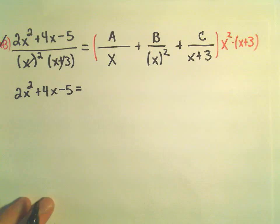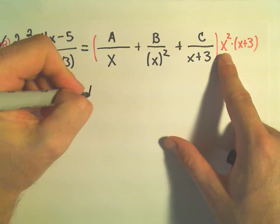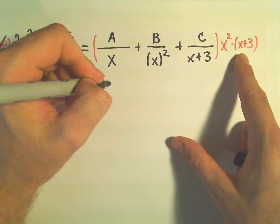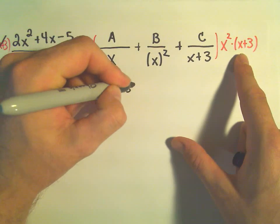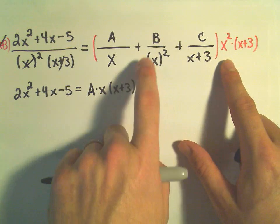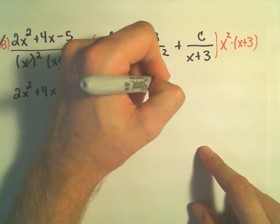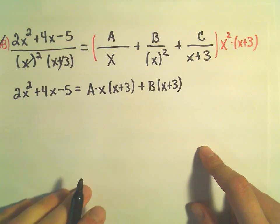On the right side, when we multiply, one of the x's will cancel out. So, we'll be left with A times x, and then x plus 3. We'll also be left with, so when we distribute all this out, notice the x squareds will cancel. And we'll just be left with B times x plus 3.